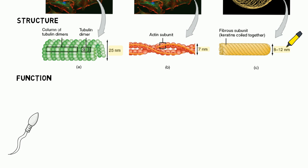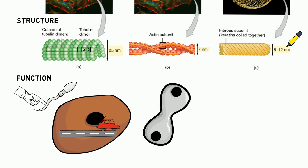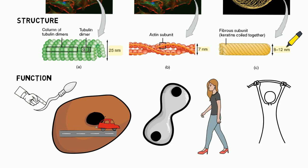Microtubules are important for the swimming movement of sperms as they are found in the flagella. They are also needed for transport within the cell. Microfilaments are important for cell division and movement. Intermediate filaments are important for providing mechanical strength to the cell.